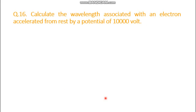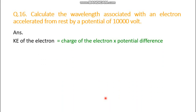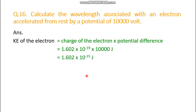Calculate the wavelength associated with an electron accelerated from rest by a potential of 10,000 volts. The kinetic energy of the electron equals charge of the electron times potential difference: 1.602 × 10⁻¹⁹ coulomb times 10,000 volts. Since coulomb times volt equals joule, the kinetic energy is 1.602 × 10⁻¹⁵ joule.